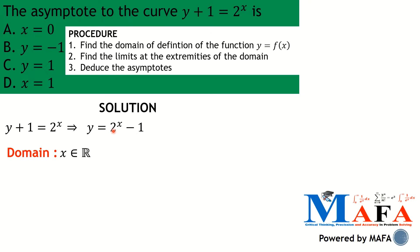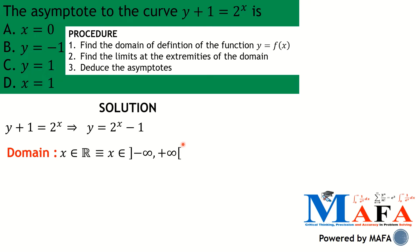We need to write the domain in interval notation using parentheses or square brackets, so we can identify the extremities or boundaries. The set of real numbers is the interval from negative infinity to positive infinity, both excluded — since infinity is not a number. So negative infinity and positive infinity are the extremities or boundaries of our domain.